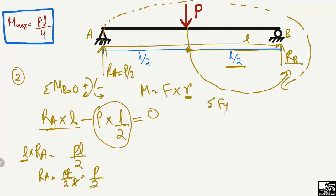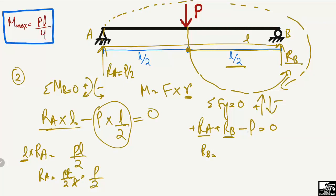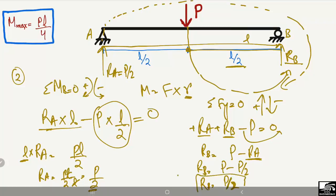To find RB, we use the summation of vertical forces equal to zero, with upward forces positive and downward forces negative. RA and RB are acting upward, and P is acting downward. So: RA + RB − P = 0, which gives RB = P − RA = P − P/2 = P/2. Therefore RB is also equal to P/2.